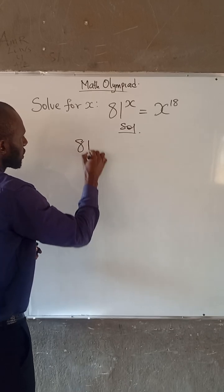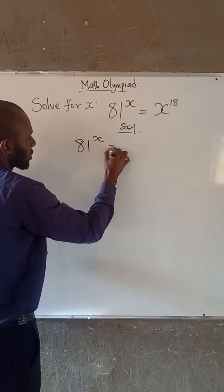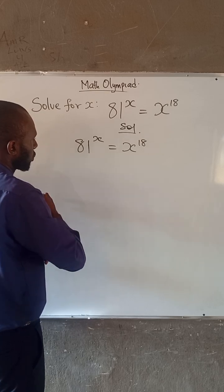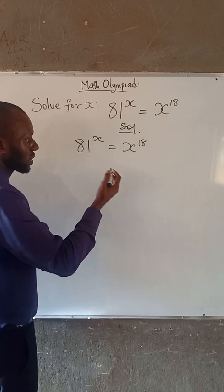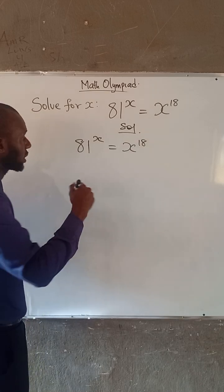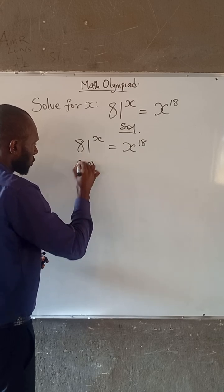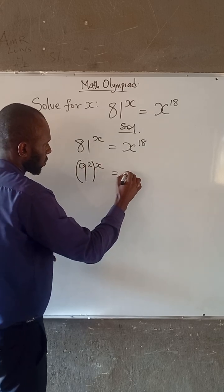So we have that 81 to the power of x is equal to 2 to the power of 18. Now note that 81 can be written as 9 squared. So 9 squared all to the power of x is equal to 2.